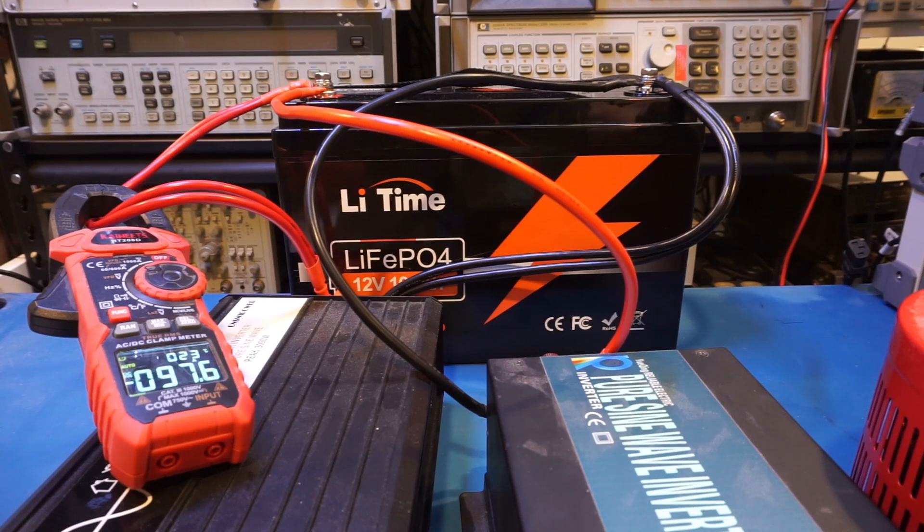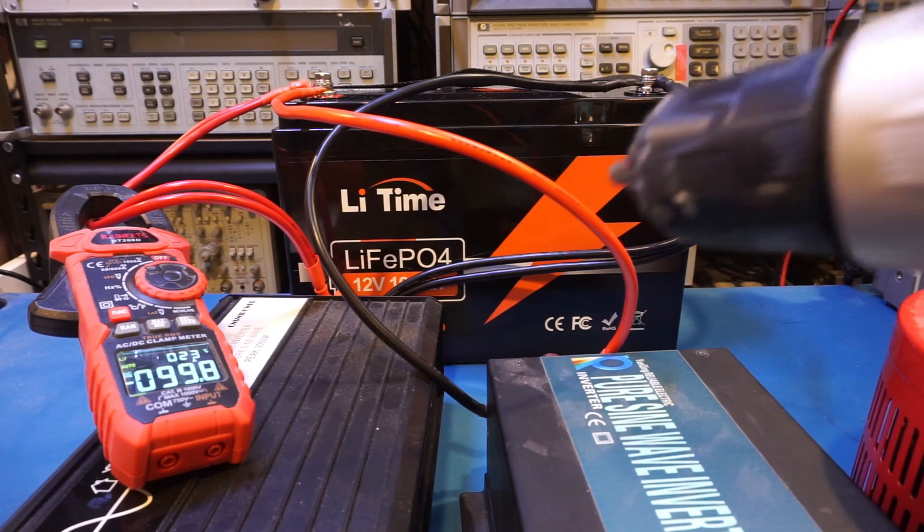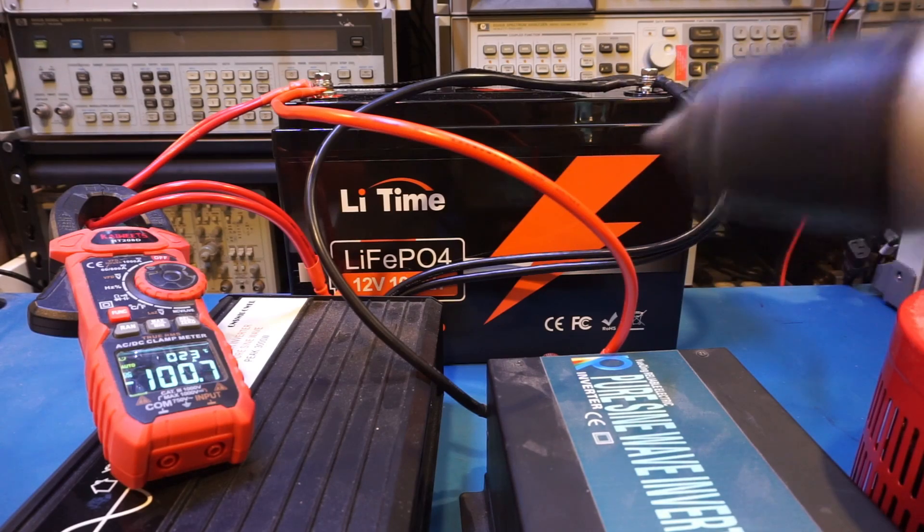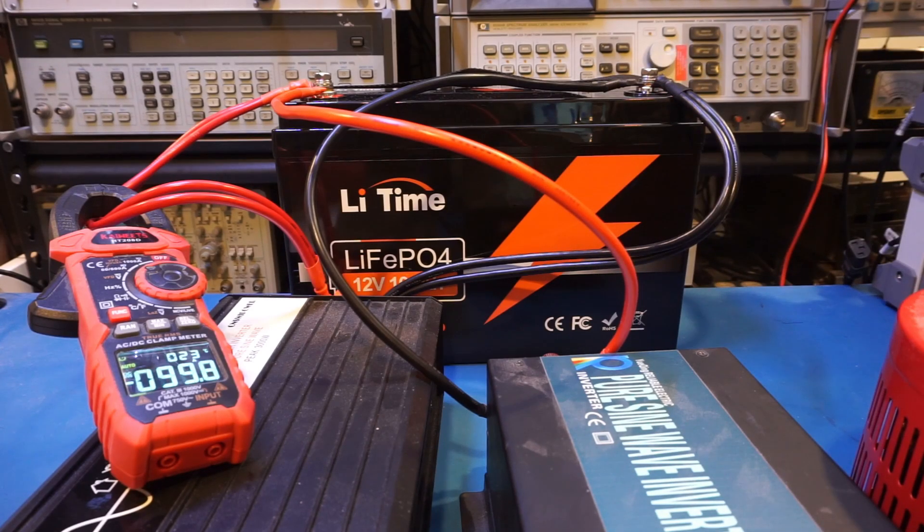So we're back to 100A roughly. And let's try the drill again. And you can see that. No problem at all. So you can see here we have no issue with the peak current load from the battery.